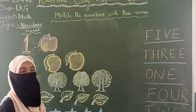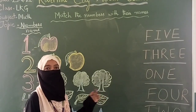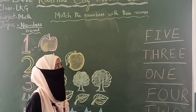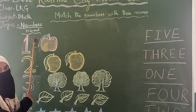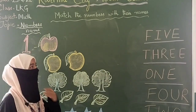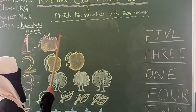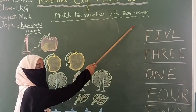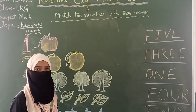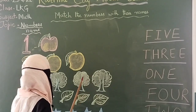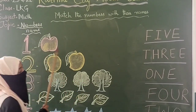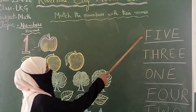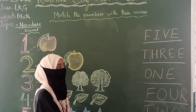Now kids, we have learned the spellings of the numbers. Now we will do some exercise related to number names. See, what's written here? It says match the numbers with their names. We will match the numbers with their names — numbers are written here and names are written here.